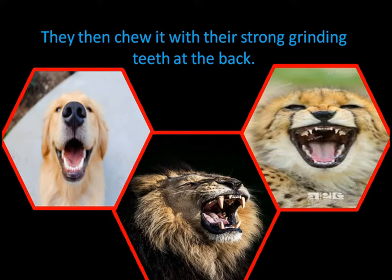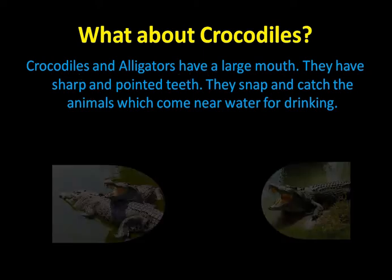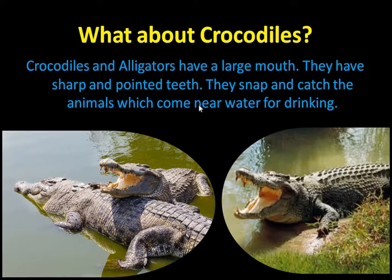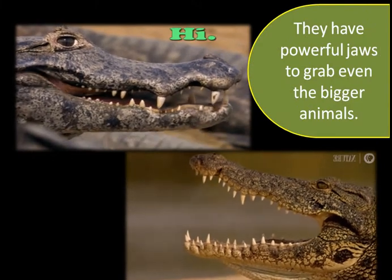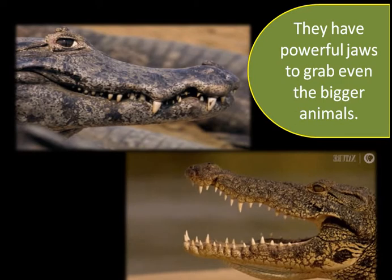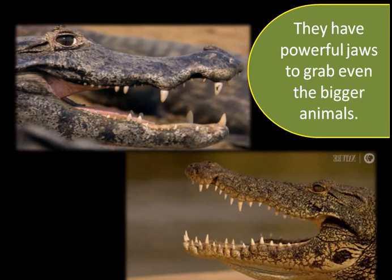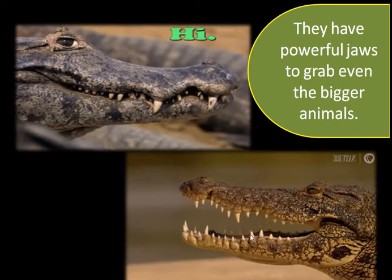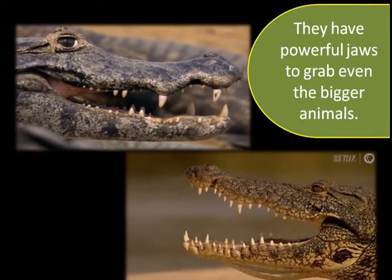What about crocodiles? The crocodiles and alligators have got a very large mouth and sharp and pointed teeth. They snap and catch the animals which come near for drinking water. They have such powerful jaws that they can grab even bigger animals.